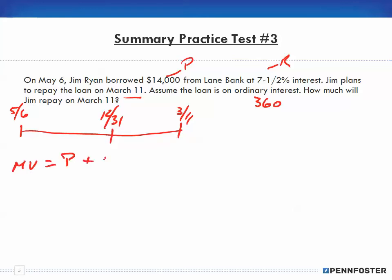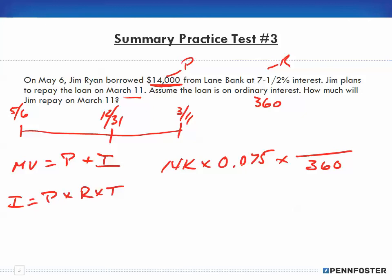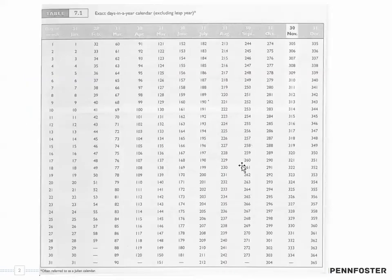How much he'll pay is the maturity value: principal plus interest. We know the principal was $14,000 but we have to figure out the interest. Interest is principal times rate times time, so we have $14,000 times 0.075 for our interest rate times, we're going to put that over 360 for our time, but we have to figure out how many days.